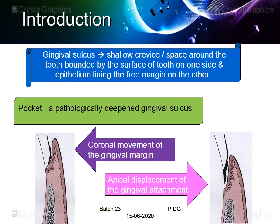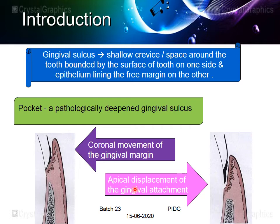To start with, the gingival sulcus is a V-shaped shallow crevice or space around the tooth, bounded by the surface of the tooth on one side and the epithelial lining of the free margin on the other side. If the gingival sulcus is deepened due to any pathology, we term it as a pocket — a pathologically deepened gingival sulcus. This deepening could be because of coronal movement of the gingival margin, as in gingival enlargement, or apical displacement of the gingival attachment apparatus, as in a true pocket.